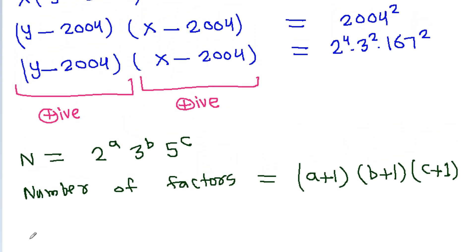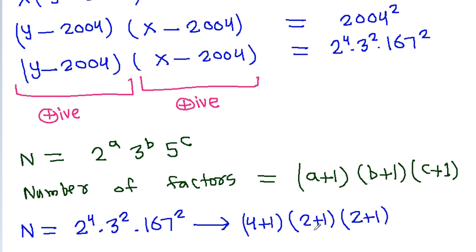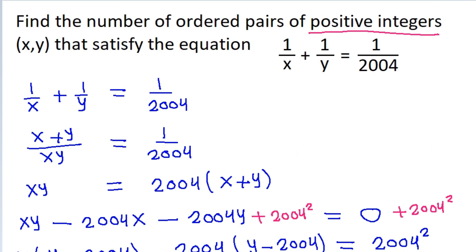So here we have 2004² = 2⁴ × 3² × 167². The number of factors will be (4+1)(2+1)(2+1) = 5 × 3 × 3 = 45. So the number of ordered pairs of positive integers x, y is 45.